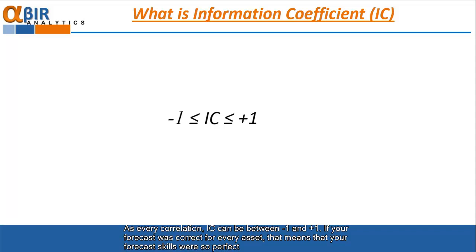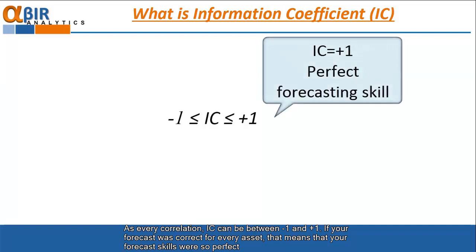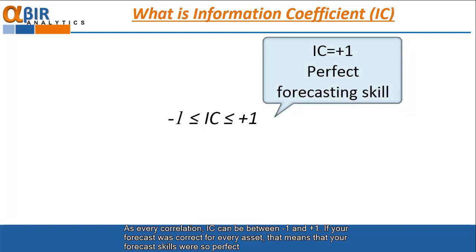As every correlation, IC can be between minus 1 and plus 1. If your forecast was correct for every asset, that means that your forecast skills were so perfect that you forecasted totally correct, which assets will be winners and which assets losers, then your IC will be plus 1.